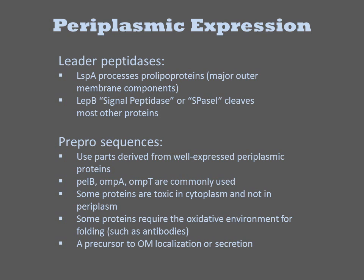There are various reasons why you might want to send a protein to the periplasm. Some proteins are toxic in the cytoplasm but just fine in the periplasm. Some, like antibodies, require the oxidative or calcium-rich environment of the periplasm for proper folding and production. Also, most proteins targeted to the outer membrane or for secretion will first be transported to the periplasm.